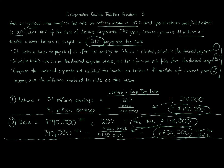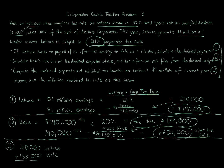That leads us to question three: compute the combined corporate and individual tax burden on Lettuce's $1 million of current year income and the effective combined tax rate. Once you've done questions one and two, this is easy — we just add up the two tax amounts. We take the $210,000 that Lettuce pays, add the $158,000 that Kale pays, and we get $368,000 total combined corporate and individual tax burden on the million dollars.